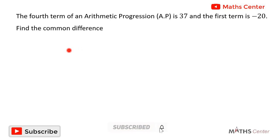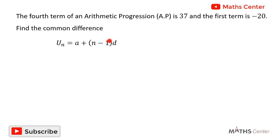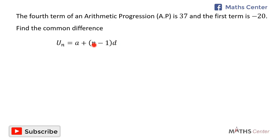A term in an arithmetic progression is given by UN, where UN is equal to A plus N minus 1 times D. Here, A is the first term, D is the common difference, and N is the term whose value you want to find.